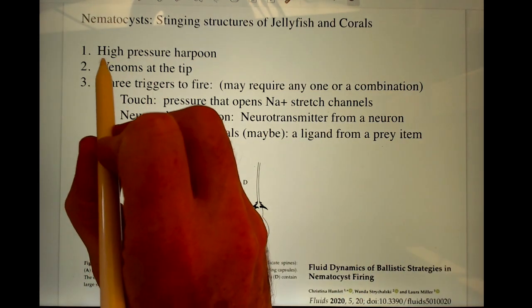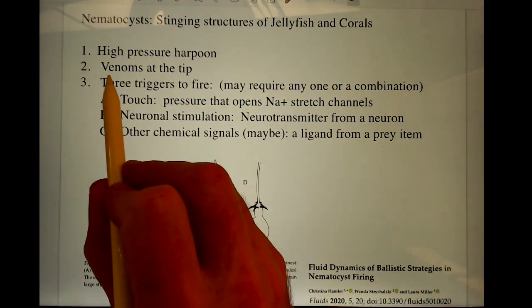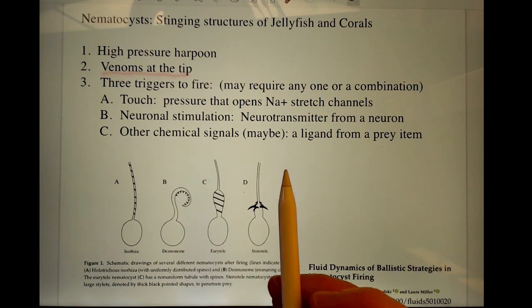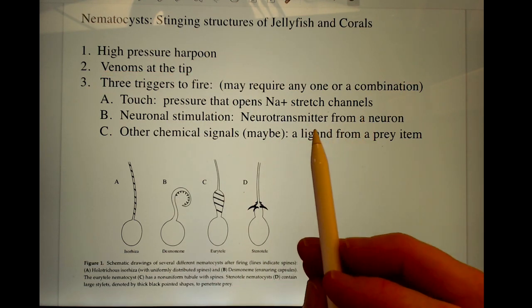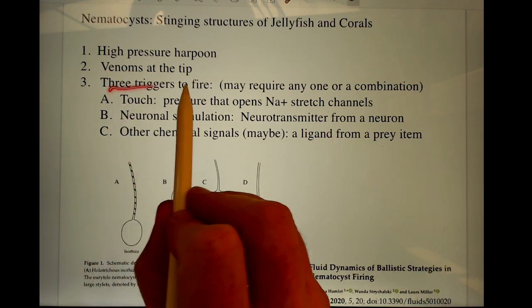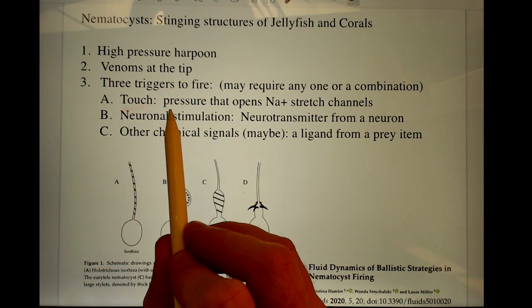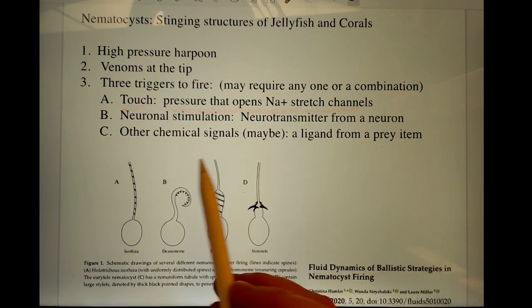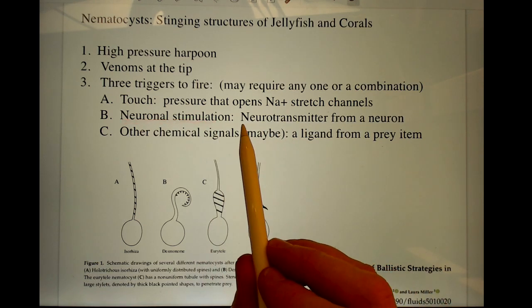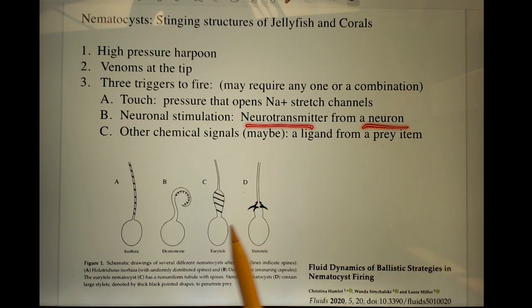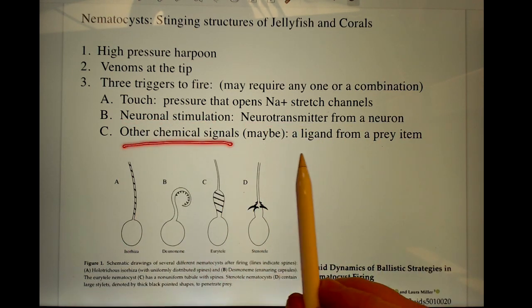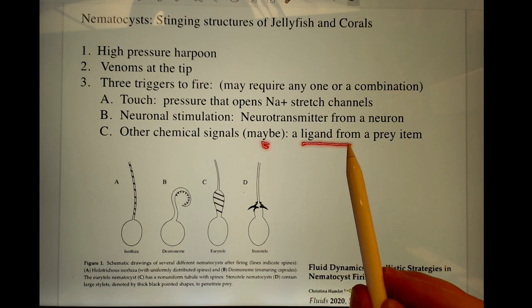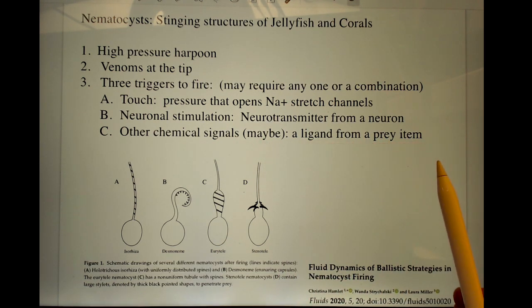They work as a high-pressure harpoon, often with venoms at the tip, although they can use sticky stuff at the tip. They can be triggered by touch, just pressure that opens sodium stretch channels, by neuronal stimulation, some neurotransmitter triggering it from a neuron, or some other chemical signal, such as possibly a ligand from a prey item.